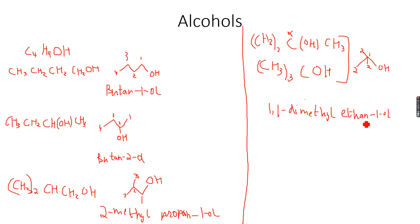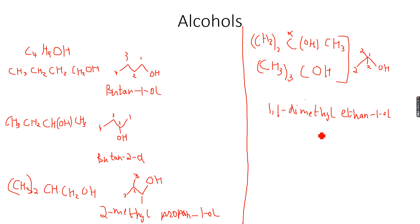So this compound is named ethan-1-ol, and on the first carbon atom there are two methyl groups attached, so it is 1,1-dimethylethan-1-ol — 'one one' because both methyl groups are attached on the first carbon atom, 'dimethyl' because there are two methyl groups. This alcohol is called a tertiary alcohol.